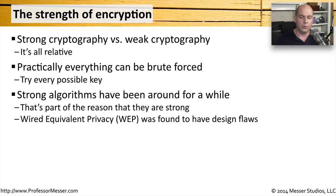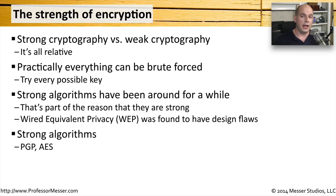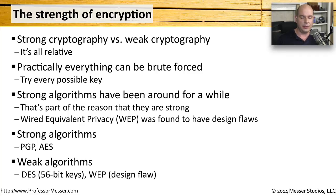These strong algorithms have been here for quite some time — that's the reason we call them strong algorithms. Other algorithms like Wired Equivalent Privacy, or WEP, used on wireless networks had design flaws found after implementation, turning it from a strong algorithm into a remarkably weak one overnight. Strong encryption algorithms include things like PGP or AES, whereas weak ones include WEP and DES, which used very small 56-bit keys. These days we use Triple DES with larger keys, effectively strengthening it by modifying underlying algorithm features.